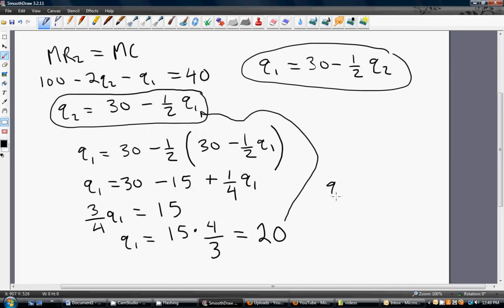If firm 1 wants to produce 20 units of output, let's see what firm 2 wants to do. And we see that firm 2 also wants to produce 20 units of output.